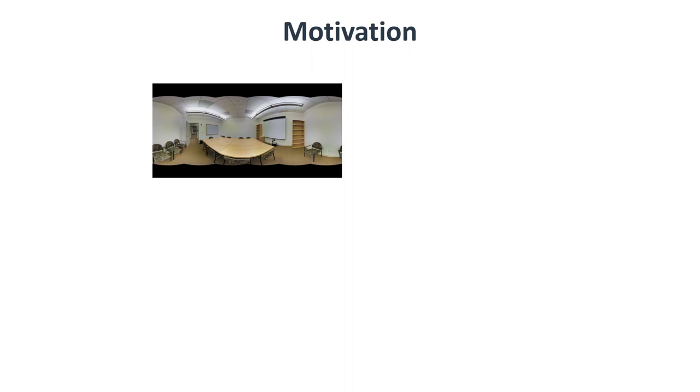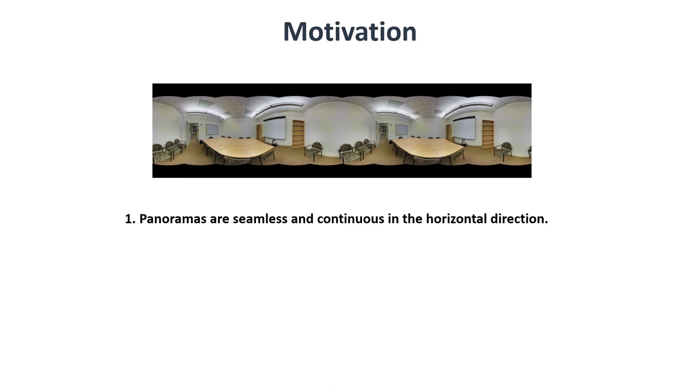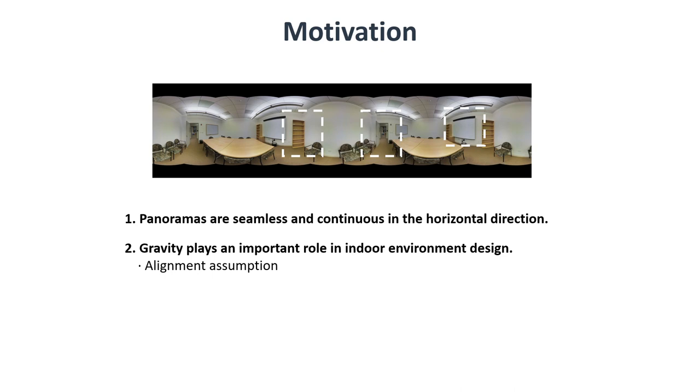In addition to the distortion, 360 panoramas have two important properties. First, panoramas are seamless and continuous in the horizontal direction. Second, gravity plays an important role in indoor design. In our example, the bookshelf, the whiteboard, the door, and the walls are gravity-aligned objects and scenes. We assume the input panorama is aligned.